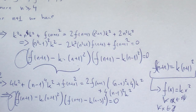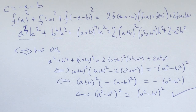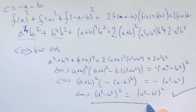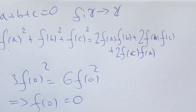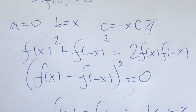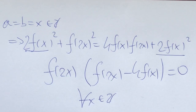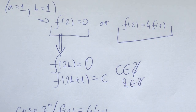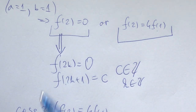Let's bring it all back and sum it up. We plugged in all zeros and got f(0) = 0, then plugging in x and −x showed we could focus on natural numbers. Looking at a = b = 1 led us to two cases: f(2) = 0 or f(2) = 4f(1). The first case gave the solution f(evens) = 0 and f(odds) = constant c, which we verified works.